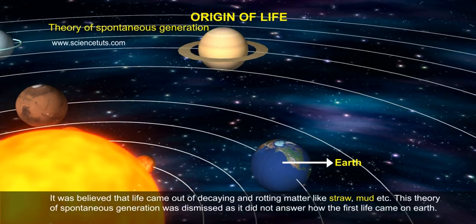It was believed that life came out of decaying and rotting matter like straw, mud, etc. This theory of spontaneous generation was dismissed as it did not answer how the first life came on Earth.